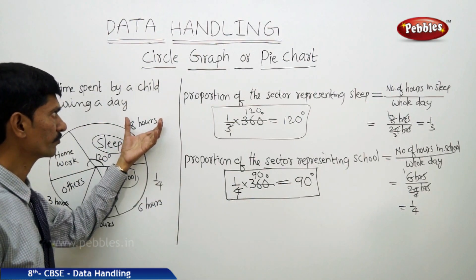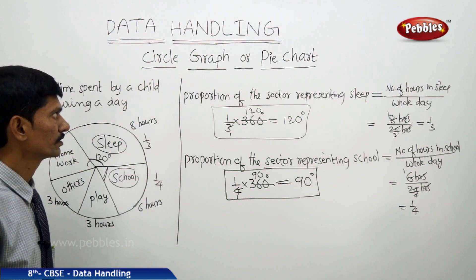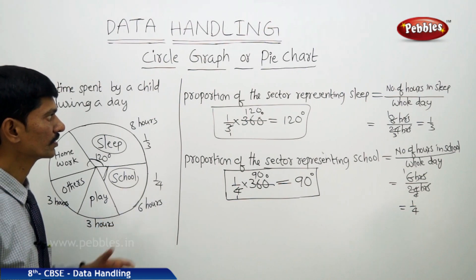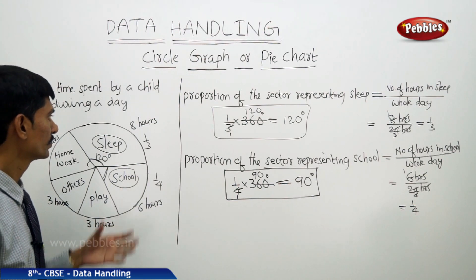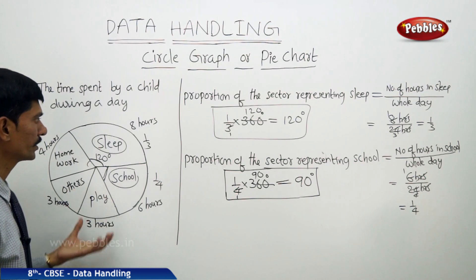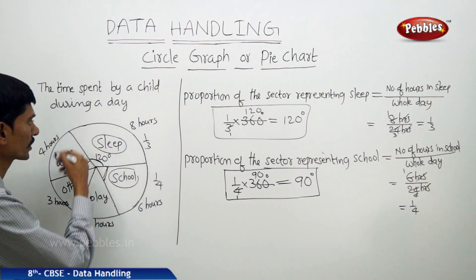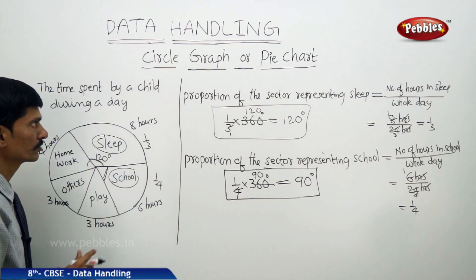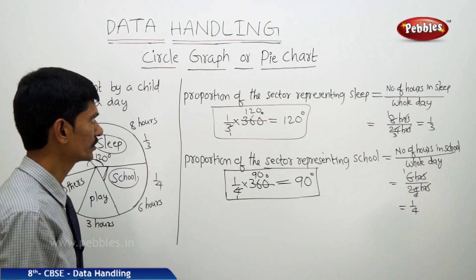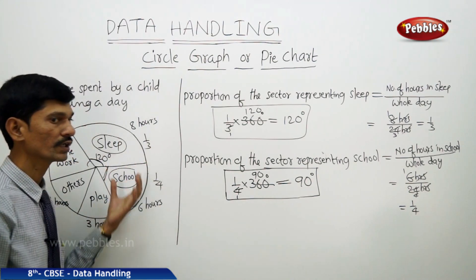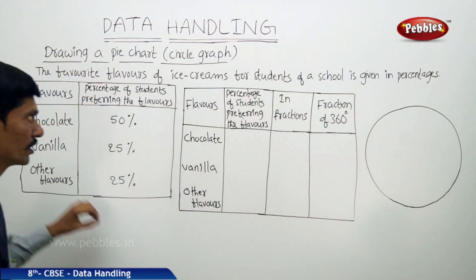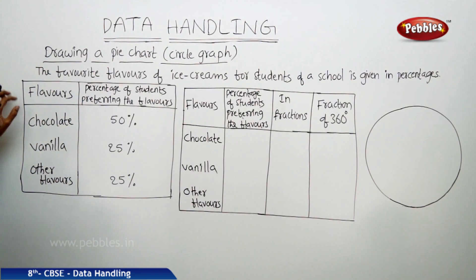The circle graph, also known as pie chart, represents the relation between the whole circle and its parts. The whole circle is divided into sectors, which is why the circle graph shows the relation between the circle and its parts. Now let us see how to draw a pie chart or circle graph.